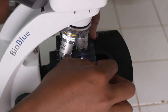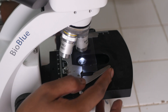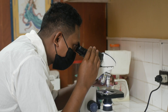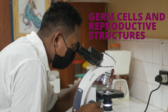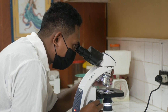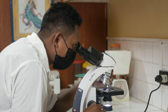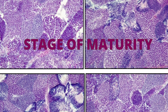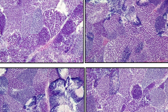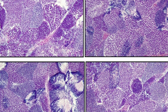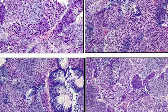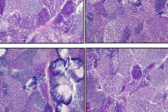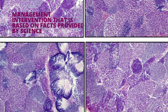Now, let us take a look at them under a compound microscope. We usually start at low magnifications, then shift to high magnifications where you can start looking for germ cells and reproductive structures and even take pictures of them. We study these pictures to know their sexual maturity based on existing literature. These pictures will show us the current stage of maturity of the samples. Data such as this is extremely useful in generating a picture of the population that we are currently extracting from our fishing grounds. This way, we can implement management interventions that are based on facts provided by science.